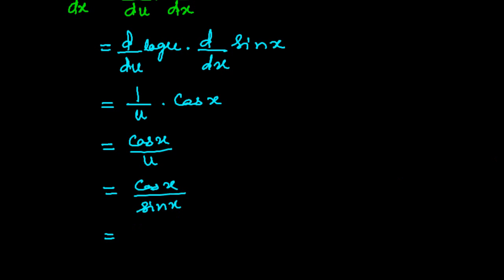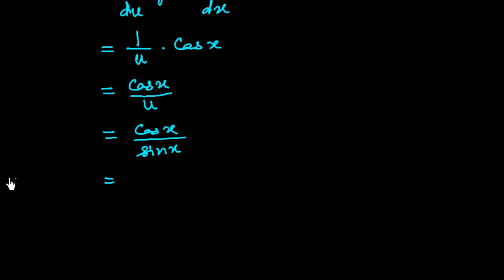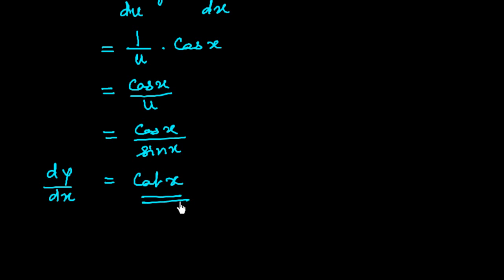And finally, we get dy over dx equal to cot x, because cos x over sin x is cot x. So this is the differentiation of the function log sin x. In this way you could easily find out the derivative of any composite function by the chain rule. Thank you.